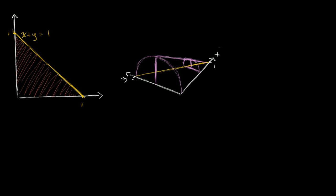What we know about this three-dimensional figure is that if we take cross-sections perpendicular to the x-axis — so cross-sections parallel to the y-axis — we know that each one will be a semicircle. Looking at the figure from above at an angle, this cross-section right over here is a semicircle. And if we take the cross-section along the y-axis, that would be this larger semicircle.